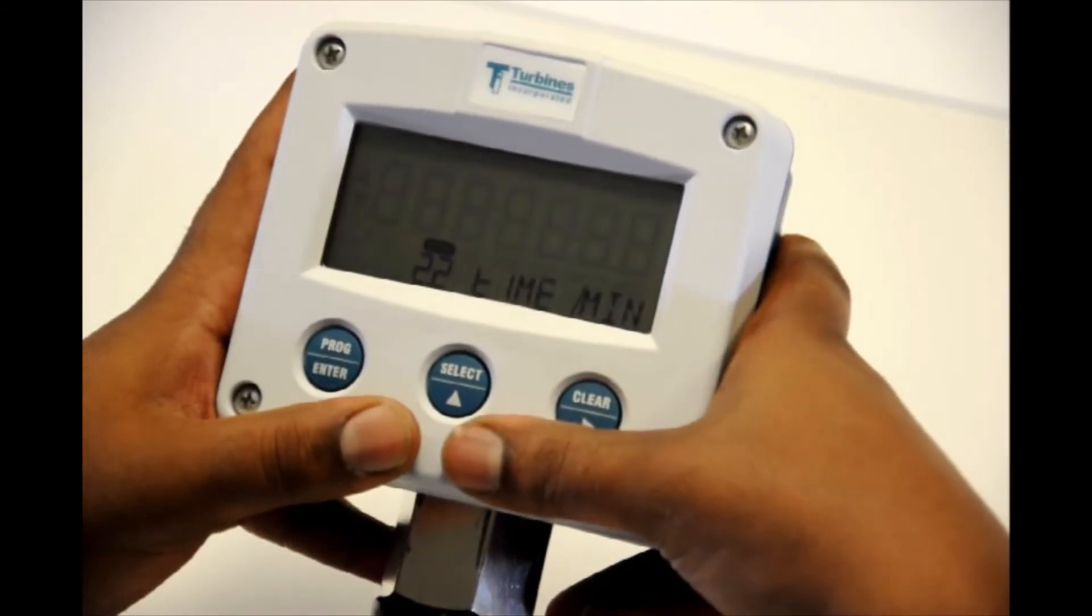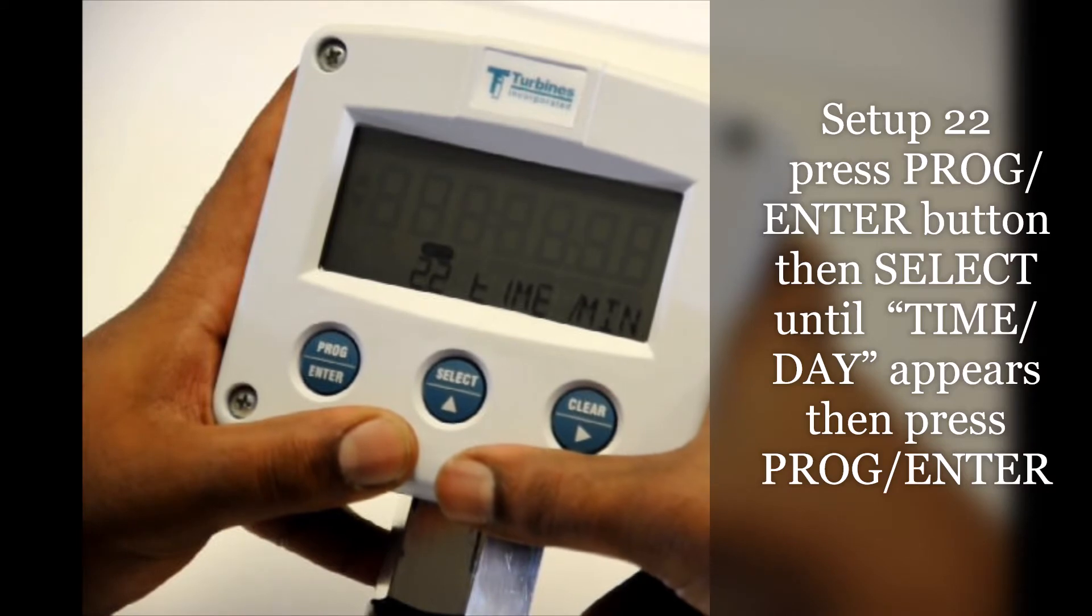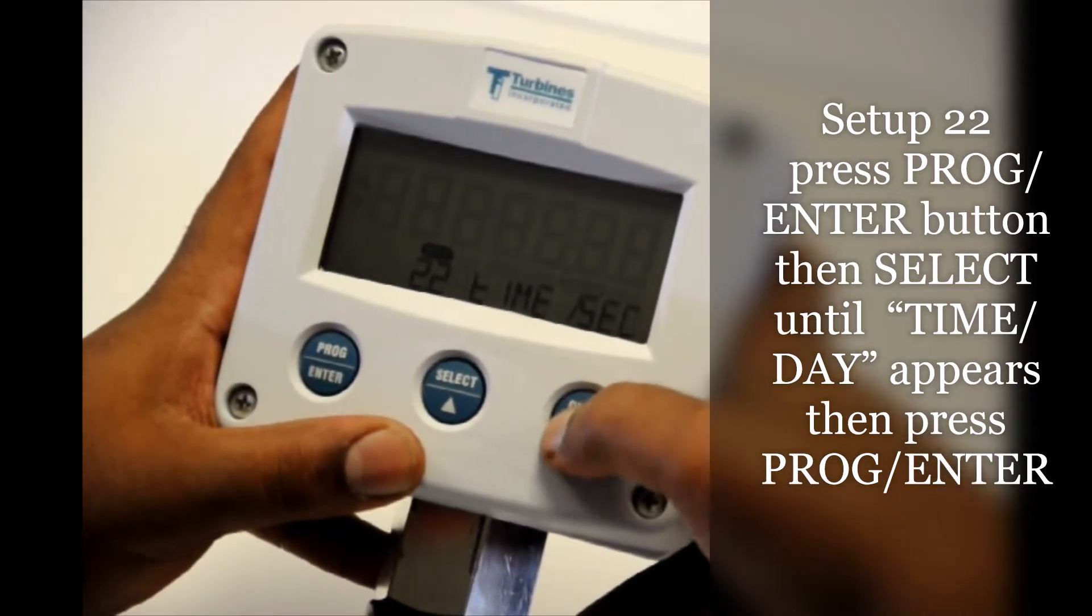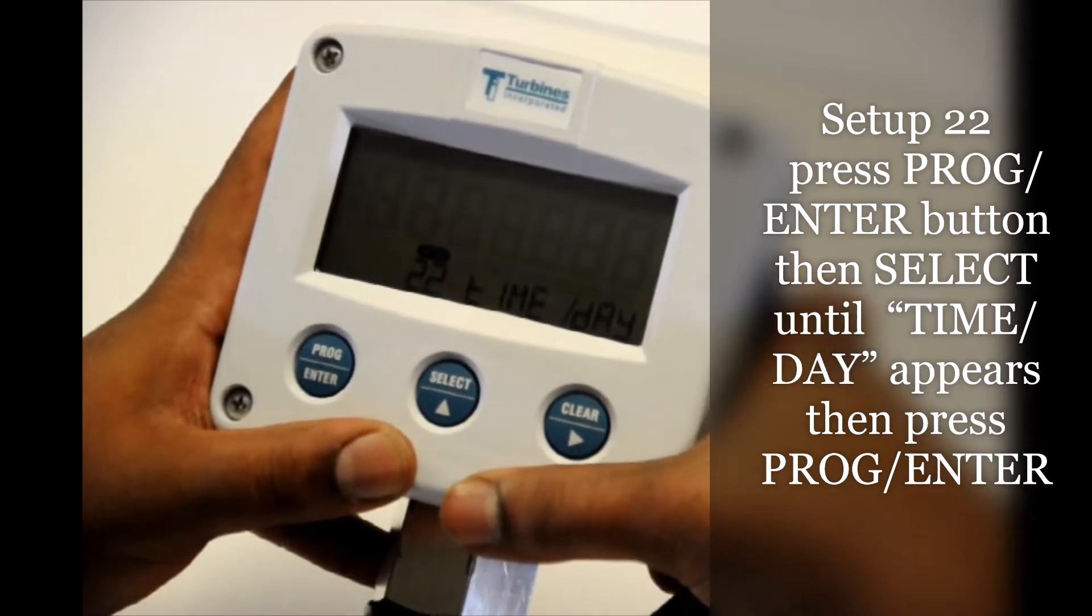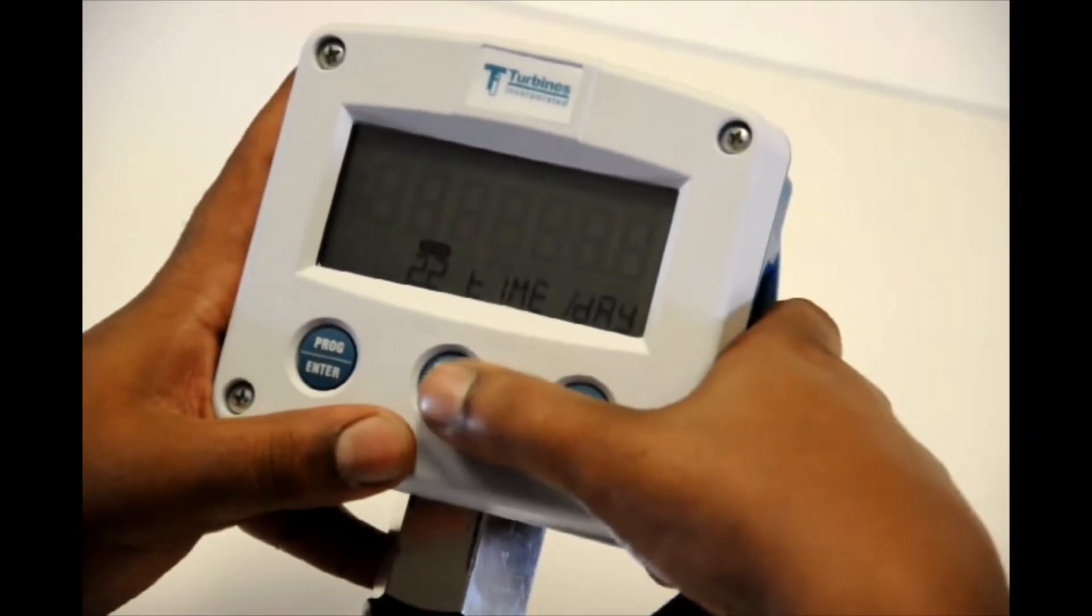Hit select. Now we're going to use our time frame just right now set up for a minute. We're going to hit program enter. Find day, second, day. So once found we're going to hit program enter. Lock that in. Use select to move to your next tier.